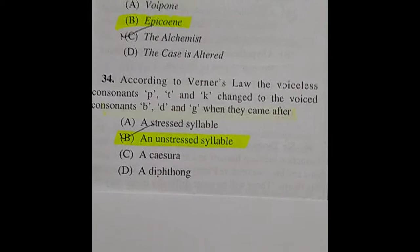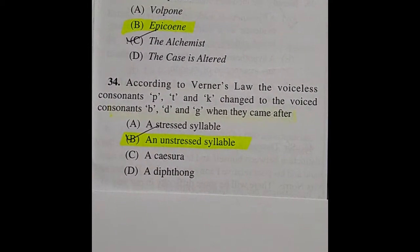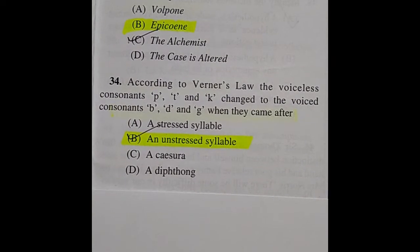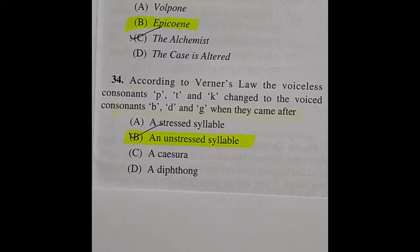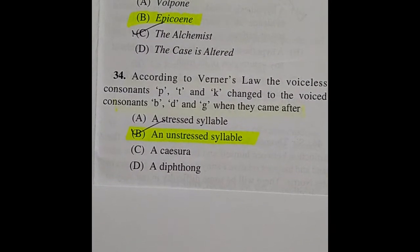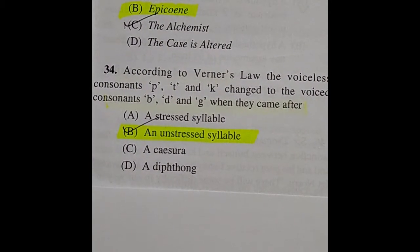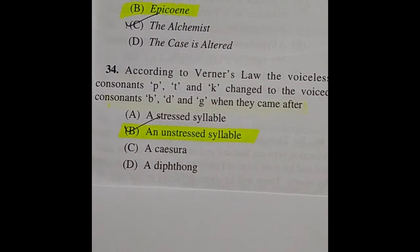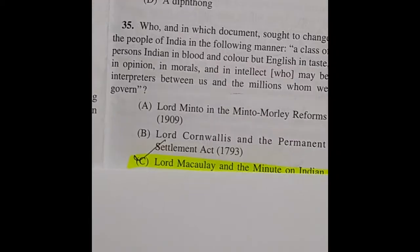Question 34: According to Verner's Law, the voiceless consonants P, T, and K changed to the voiced consonants B, D, G when they came after — the right answer is option B: an unstressed syllable.